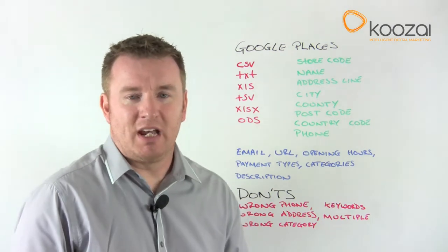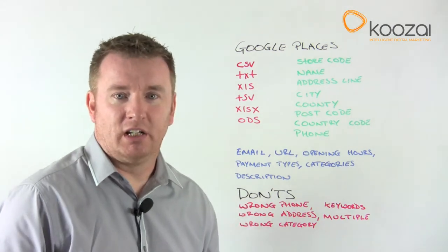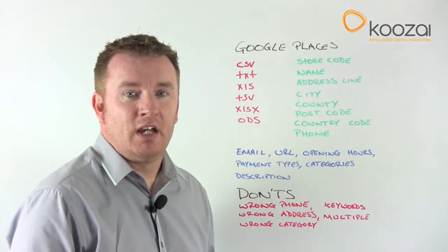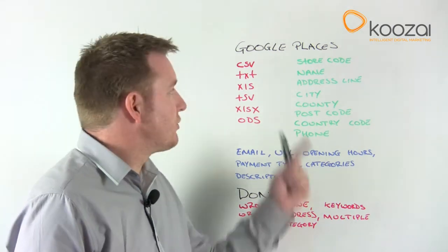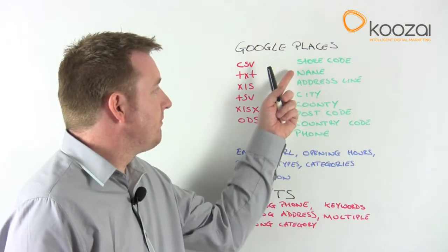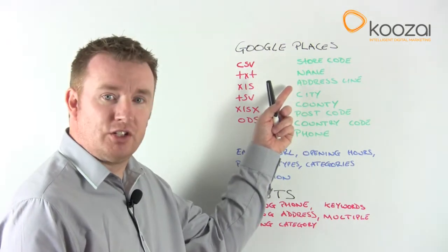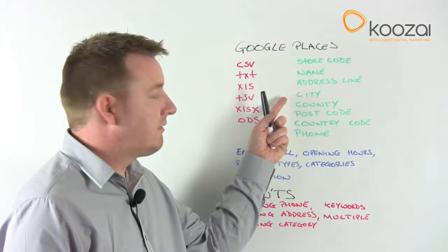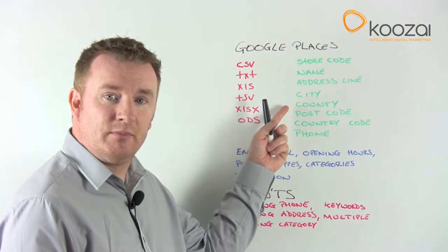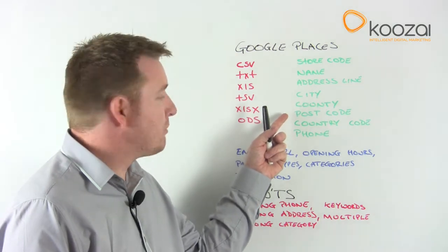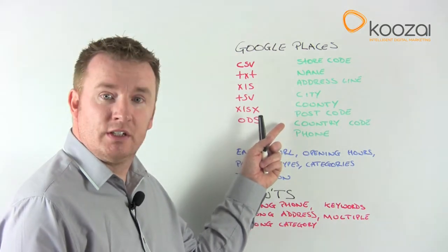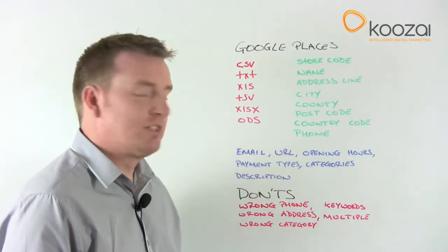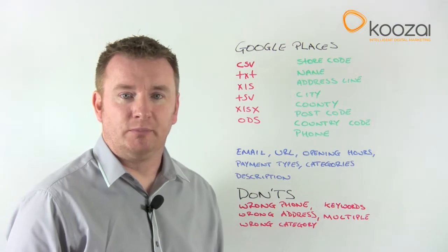There are some headers that have to be included in order for the feed to work. These are: the store location, the company name, the address, the city, the county, the postcode, the country code, and the phone number.